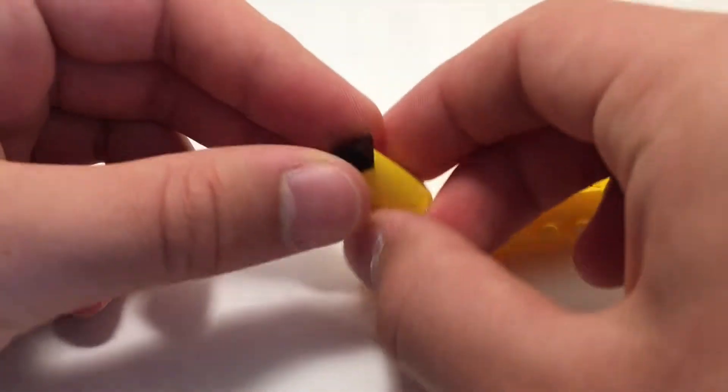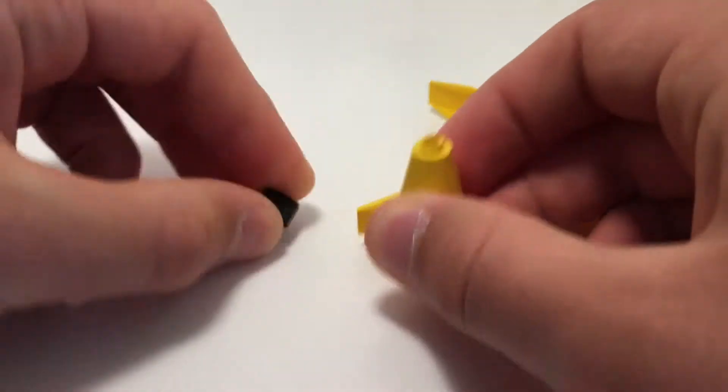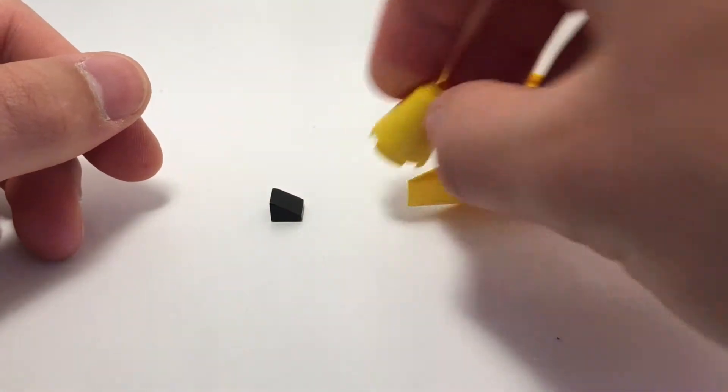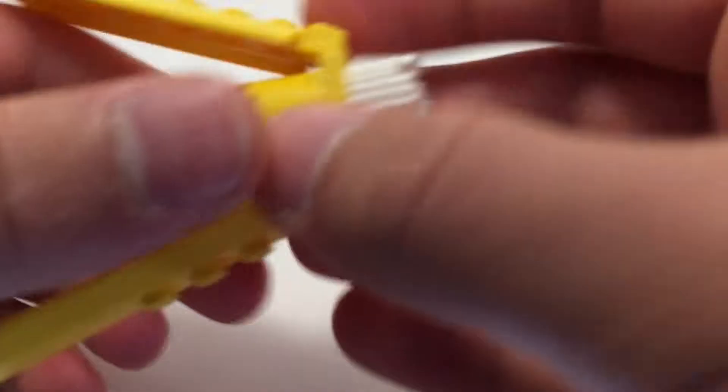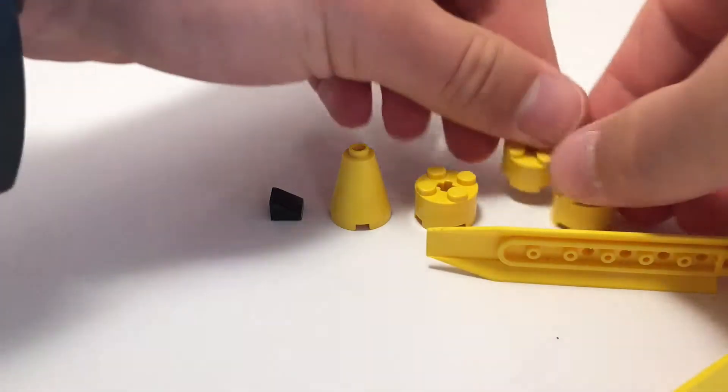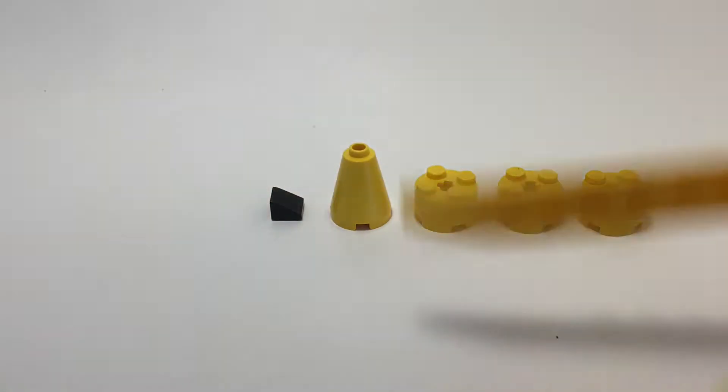Now this bottom area was constructed using a black cheese wedge, as well as a yellow cone, and then we have three yellow 2x2 rounds.